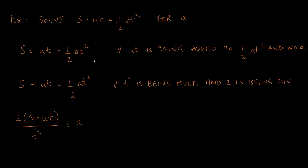Last example: solve S = ut + ½at² for a. The term ut does not contain a, so we move it to the other side by subtracting it — the opposite of addition — giving S − ut = ½at². Keep it simple and apply inverse operations without overcomplicating things with fractions.